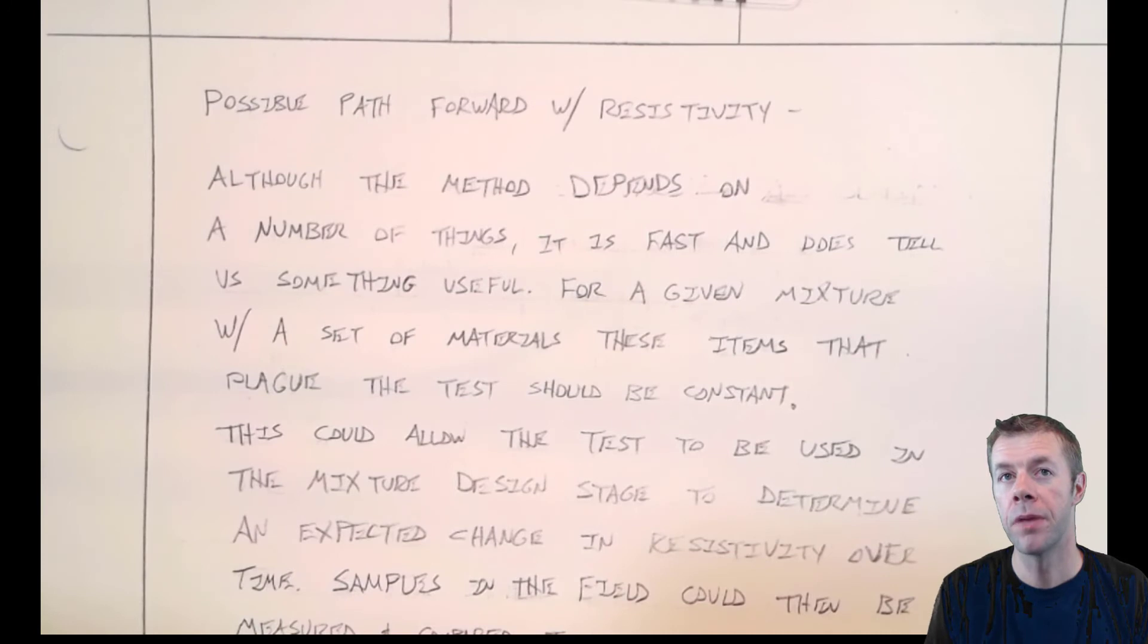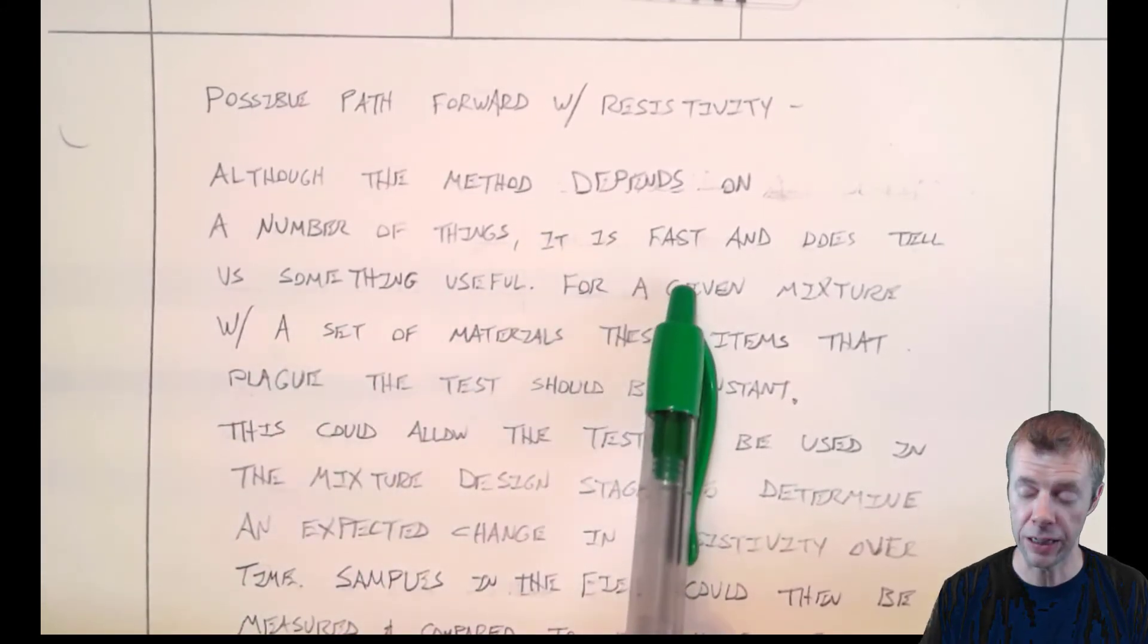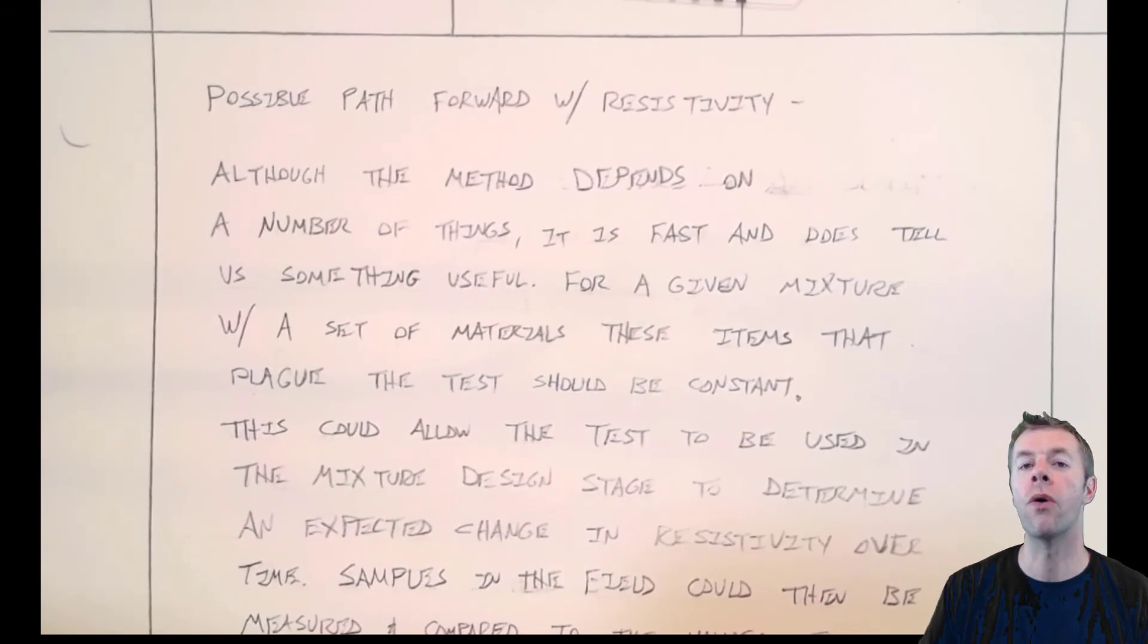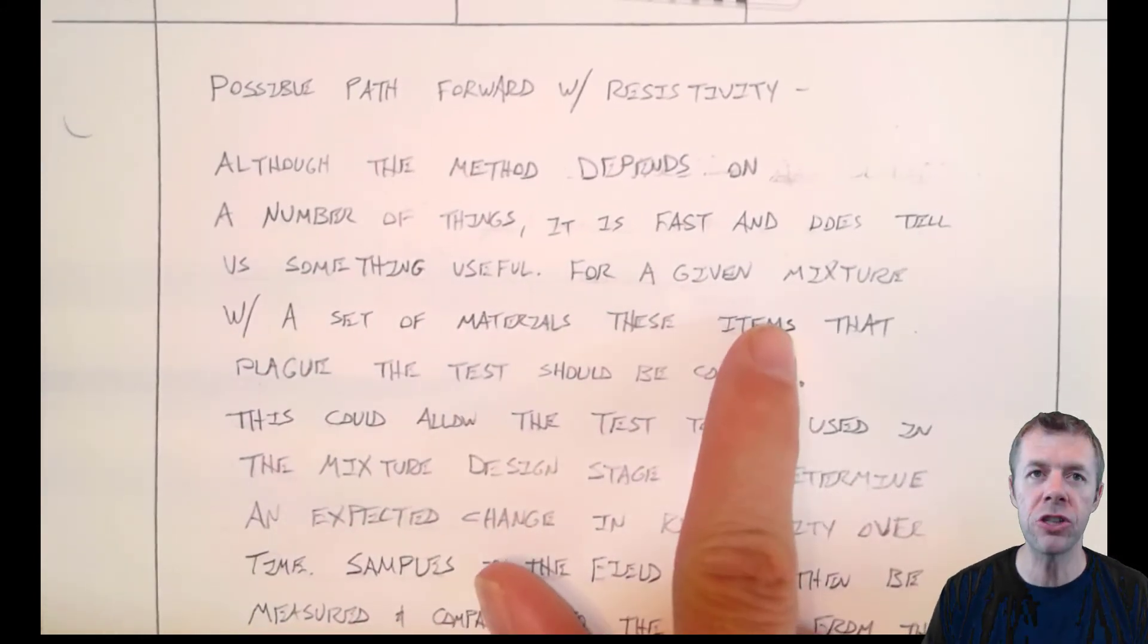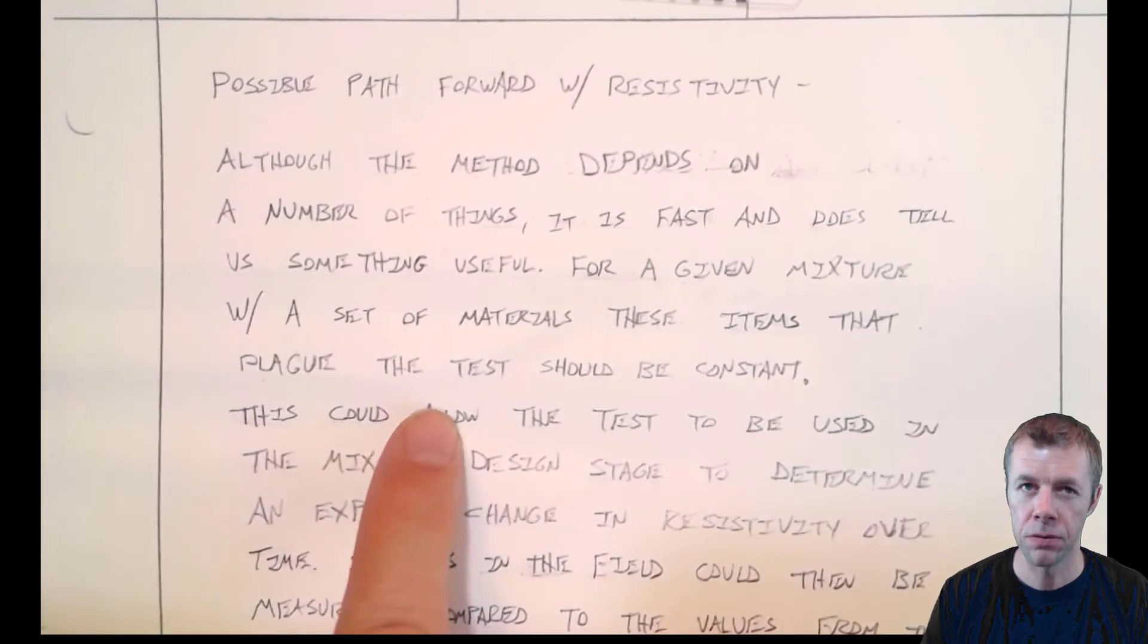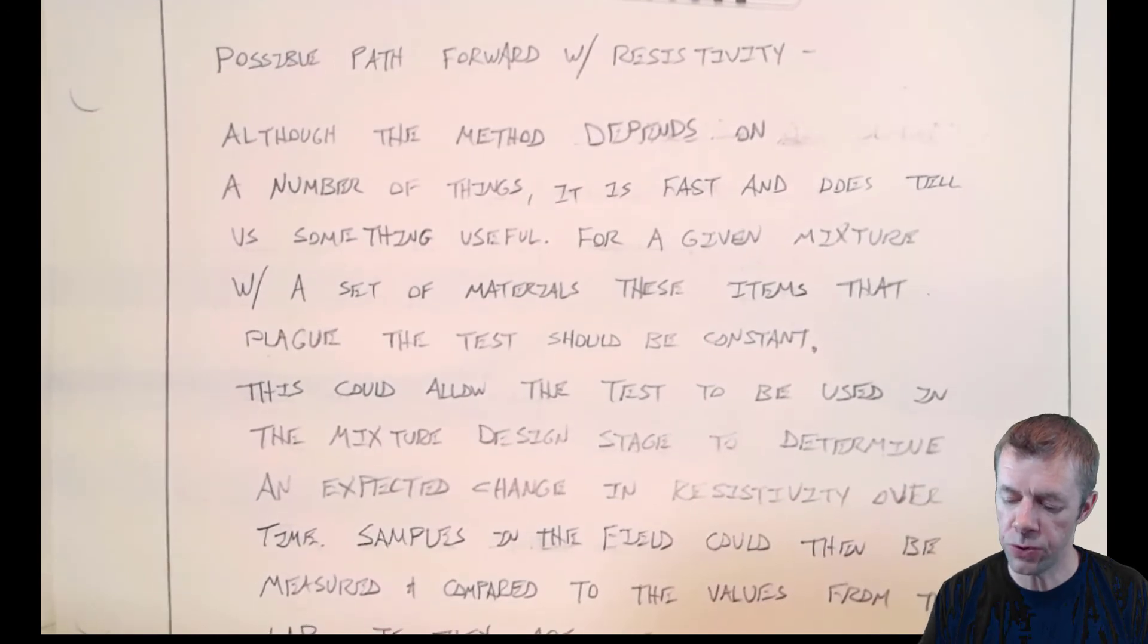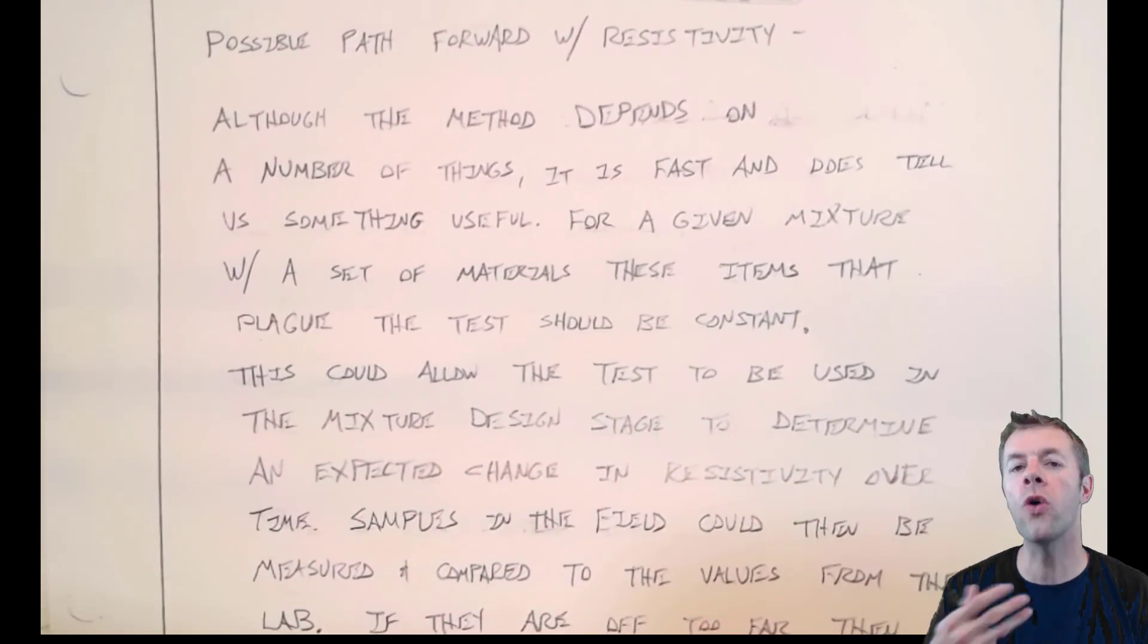One possible path forward, at least in my opinion, is that if we kind of control a lot of different things, I think this test can be really useful. What do I mean? Well, although the method does depend on a number of things, it is fast, that's good. And it does tell us something really useful. That's also good. And for a given mixture, or for a given set of materials, these items that plague the test should be pretty constant.